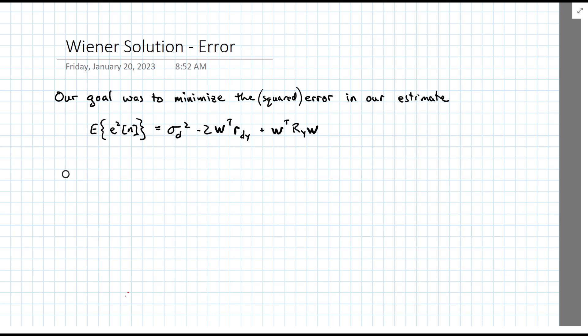It also had our filter weights times the cross-correlation between d and our input y, and an expression containing the autocorrelation of our input.